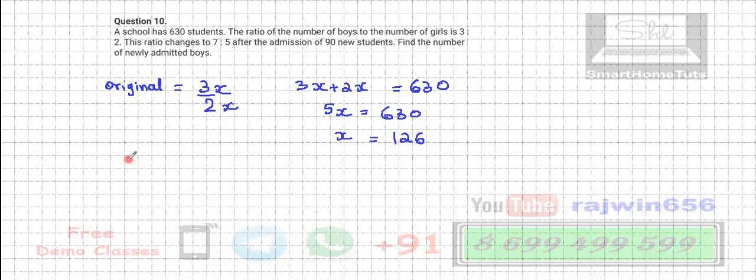So now here we have number of boys, this is 3x, 3 into 126, which is 378, and girls, this is 2x, so 2 times 126, which is 252. This is the original number of boys and girls that we have.